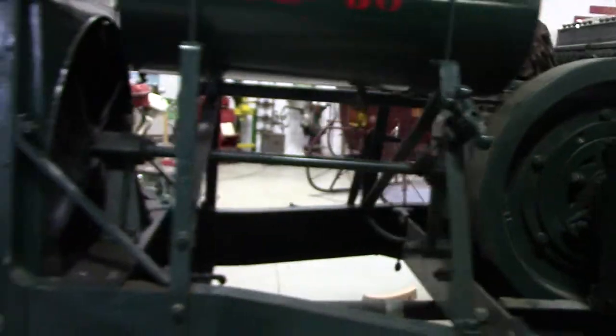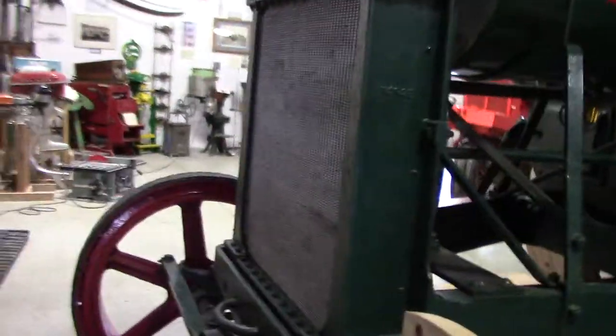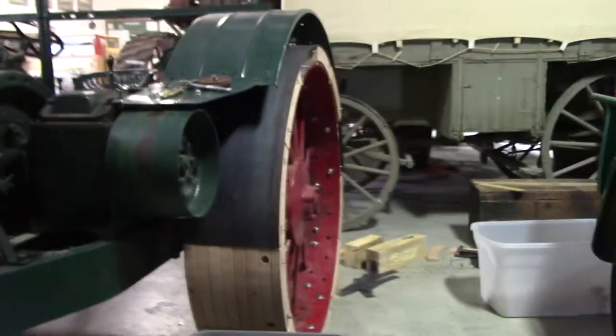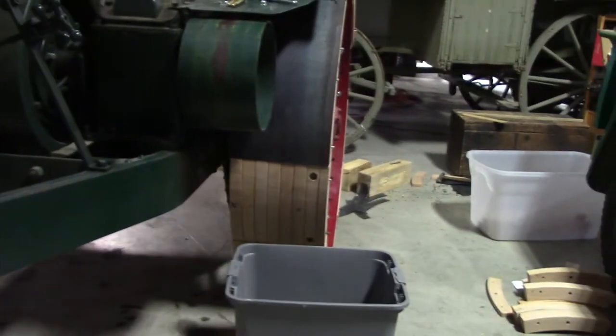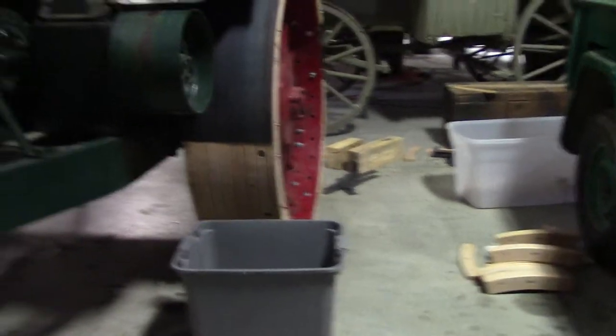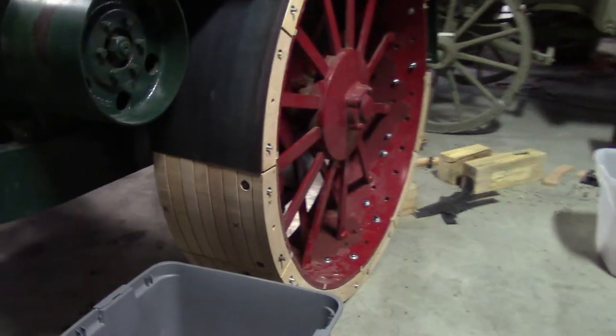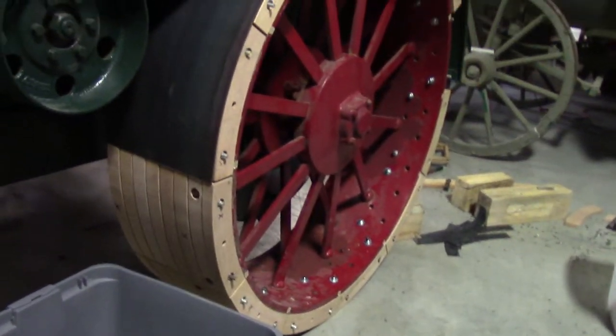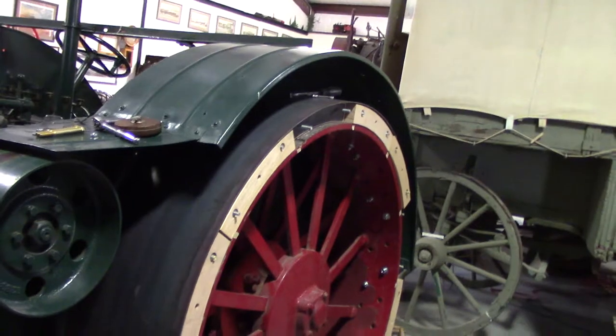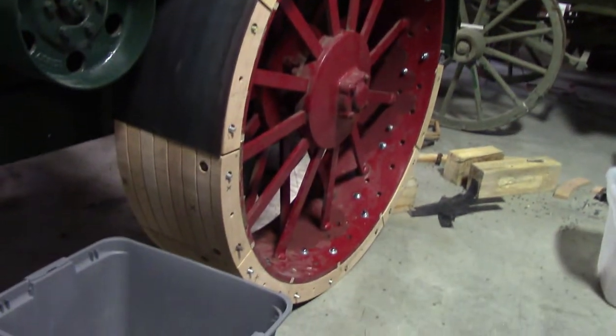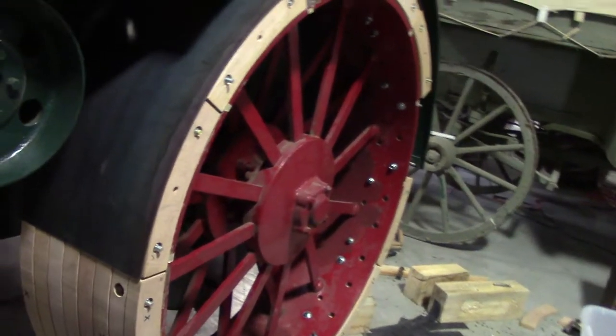So that'll make this tractor ready for the parade. That's kind of what it looks like. Almost done over here. Except for cutting the rubber and getting everything on. That'll make that really nice.